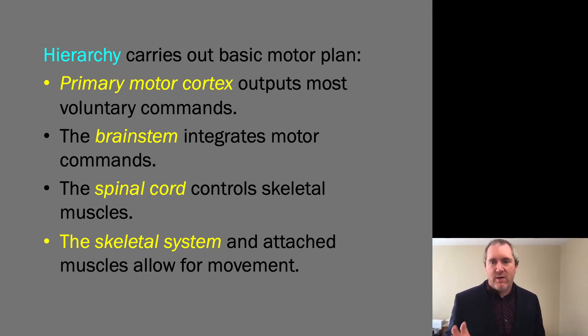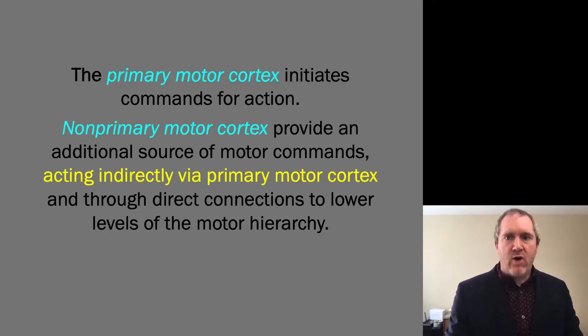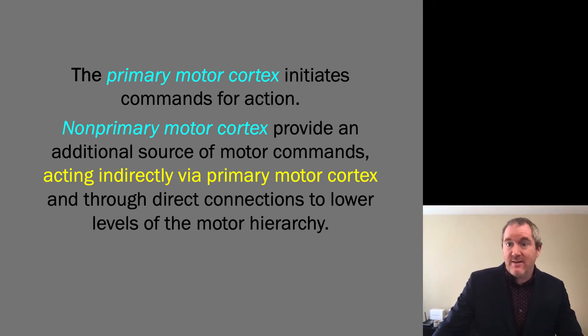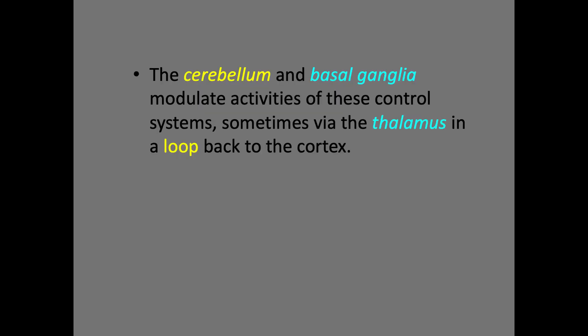The brainstem would then integrate additional motor commands, then it would descend through the spinal cord until it gets to the skeletal muscular system, which actually causes movement — but that will not occur without brain input. The primary motor cortex initiates commands for actions. The non-primary motor cortex provides an additional source of motor commands acting indirectly via the primary motor cortex and through direct connections to lower levels of the motor hierarchy. The cerebellum and basal ganglia modulate activities of these control systems, sometimes via the thalamus in a loop back to the cortex.